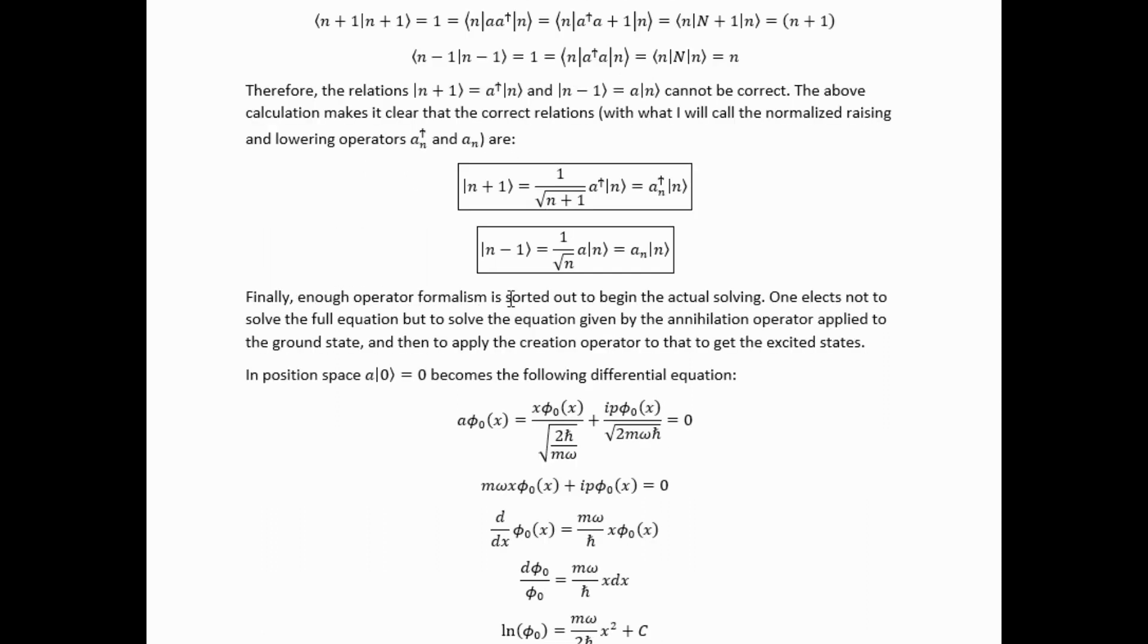Finally, enough operator formalism is sorted out now to begin the actual solving of the equation for the eigenfunctions. We figured out the eigenvalues, now we can figure out the eigenfunctions. One elects not to solve the full equation, but to solve the equation given by the annihilation operator applied to the ground state, and then to apply the creation operator to that to get the excited states, specifically normalized properly.